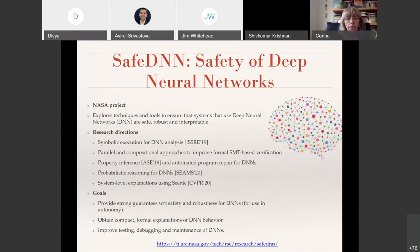At NASA Ames we have a project called SafeDNN, Safety of Deep Neural Networks, where we try to address these challenges and we explore techniques and tools to ensure that systems that use deep neural networks are safe, robust, and interpretable. We have several research directions. For example, we explore symbolic execution for DNN analysis. We explore parallel and compositional approaches to improve verification of neural networks in collaboration with Stanford University. We also have performed work on property inference and automated program repair, probabilistic reasoning for neural networks, and also a most recent project which developed system level explanation using Scenic.